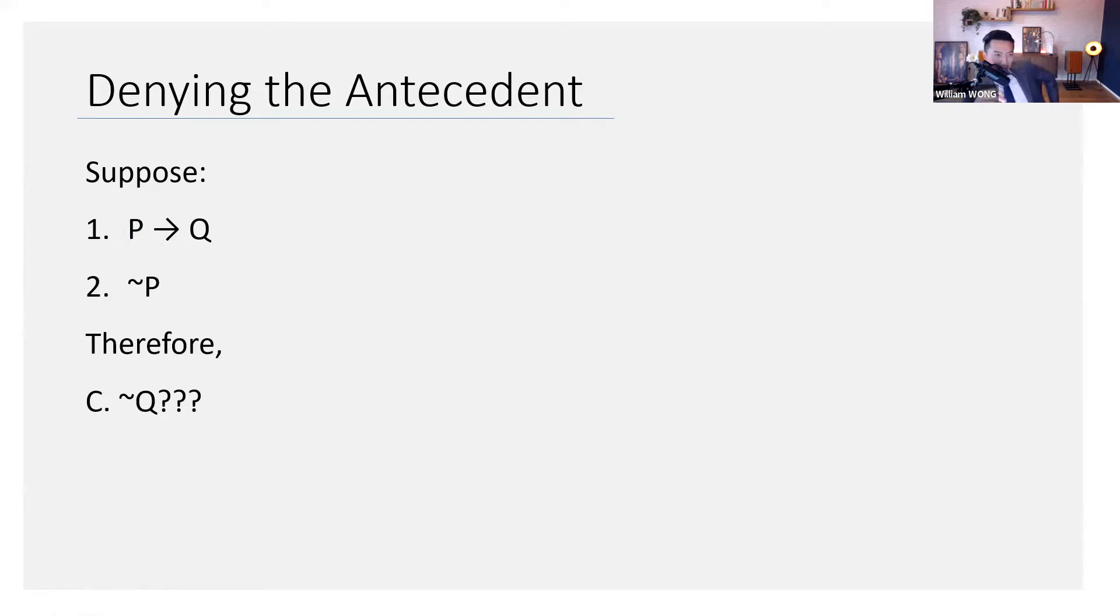Take a look at the argument: P entails Q, not P, therefore not Q. Is that right? I mean, aren't there other ways of getting Q?